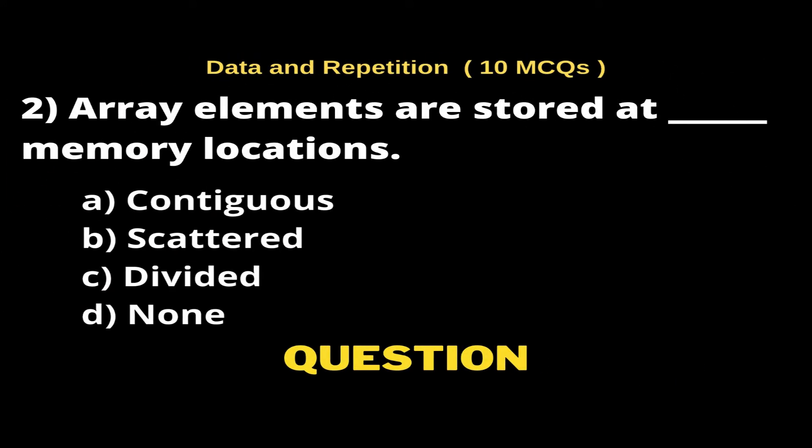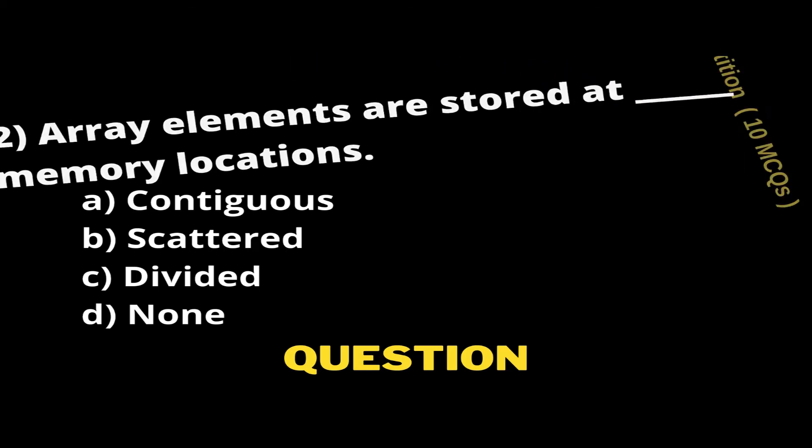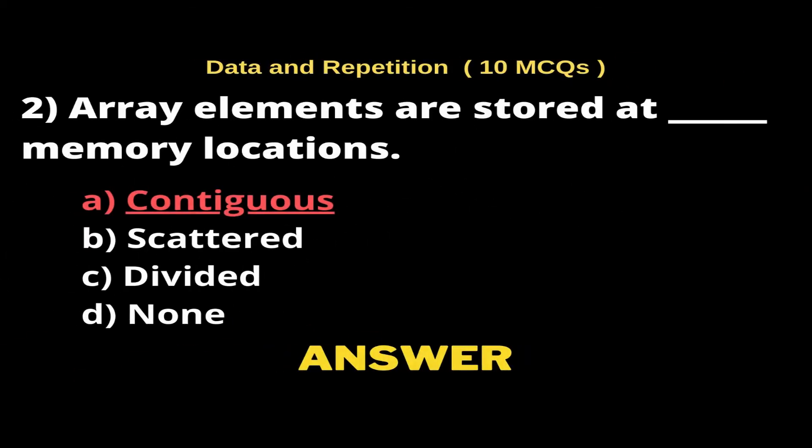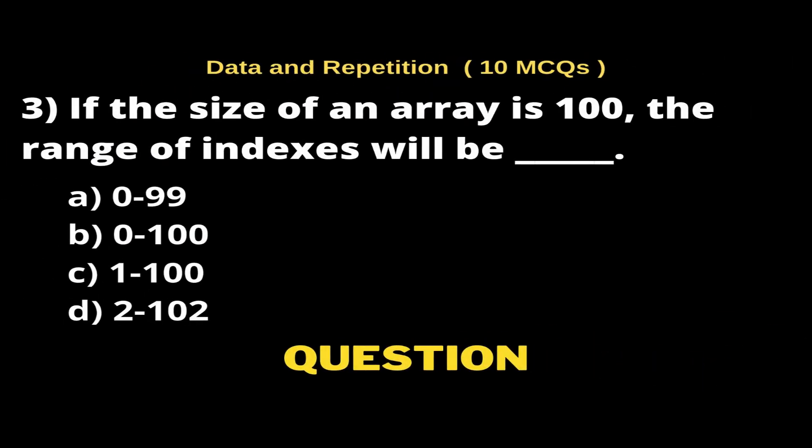Question 2: Array elements are stored at ___ memory locations. Options: A) Contiguous, B) Scattered, C) Divided, D) None. And the right answer is Option A, Contiguous.